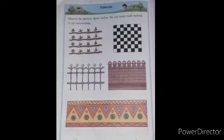Open textbook page number 66 and 68. Children, observe the different patterns given in your book. Textbook page number 66. Observe the pattern shown below. We see many such patterns in our surrounding. Children, in your textbook also, you are observing many patterns.